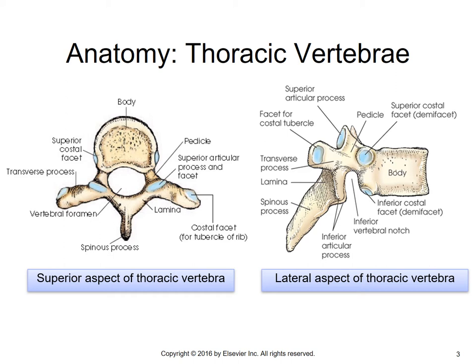If we look at the lateral view, the spinous processes for thoracic vertebrae are inclined caudally, taking a very steep caudal angulation as opposed to other areas of the spine. You can also see on this lateral the areas where the ribs attach to the vertebrae — the superior costal facet, the inferior costal facet, and a facet for the costal tubercle.